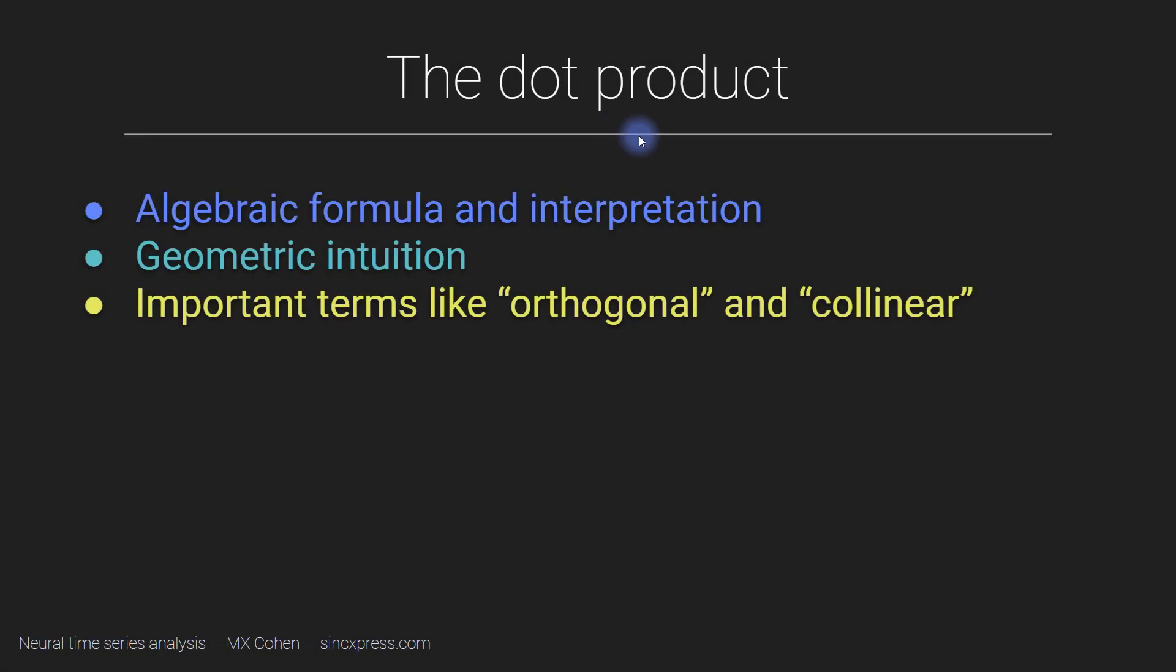The dot product is one of the single most important computational building blocks in all of linear algebra, signal processing, and statistics. The dot product is everywhere in theoretical and applied mathematics. In this video, you will learn about the dot product. It's a really simple operation. I'll show you the algebraic formula, give you some geometric intuition, and that will lead to understanding important terms like orthogonal and collinear, which are all based on the dot product.